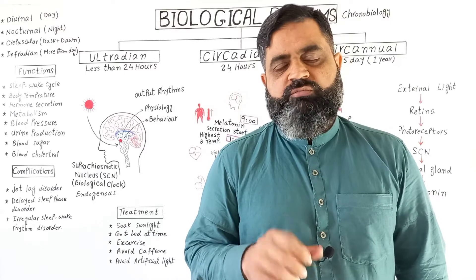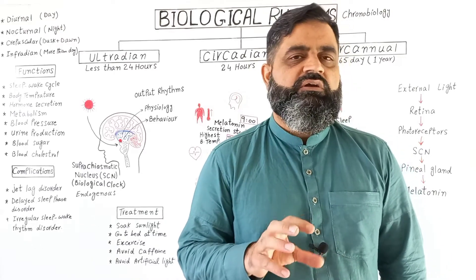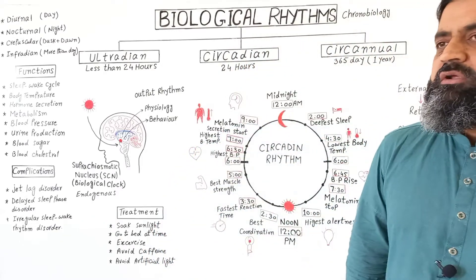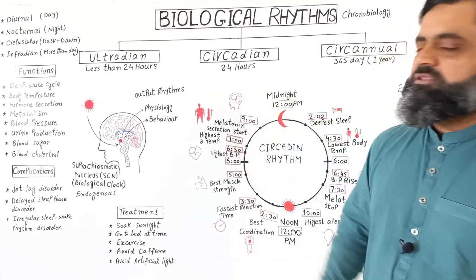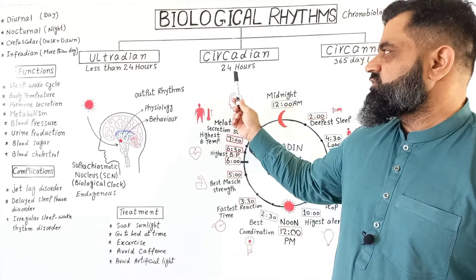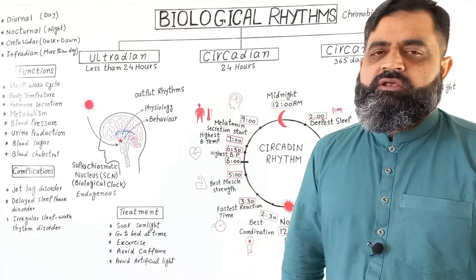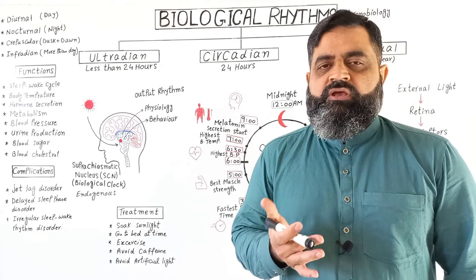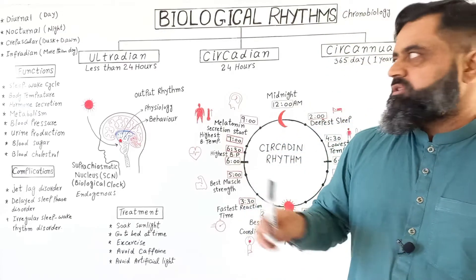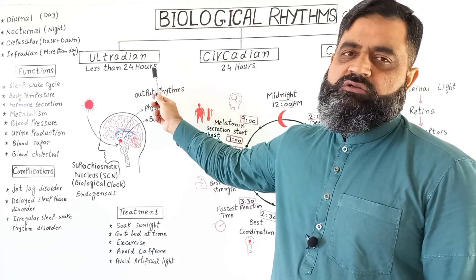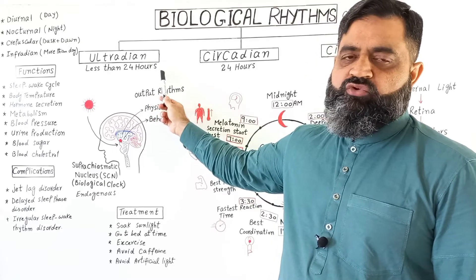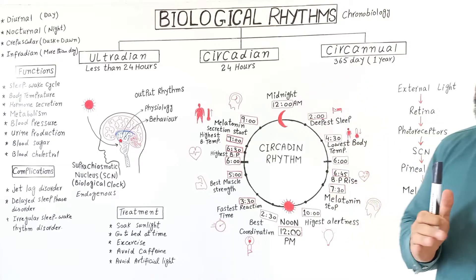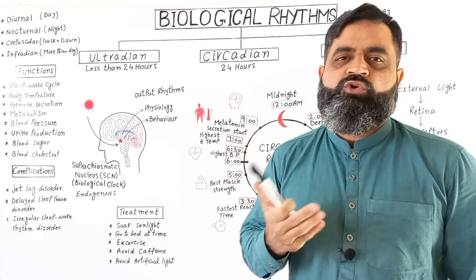There are many types of biological rhythms which occur in different living organisms at different times of the day. The most important are circadian rhythms, which occur at a 24-hour period equal to a day. There are also ultradian rhythms which occur in less than 24 hours, and circannual rhythms which take place every 365 days, equal to one year.